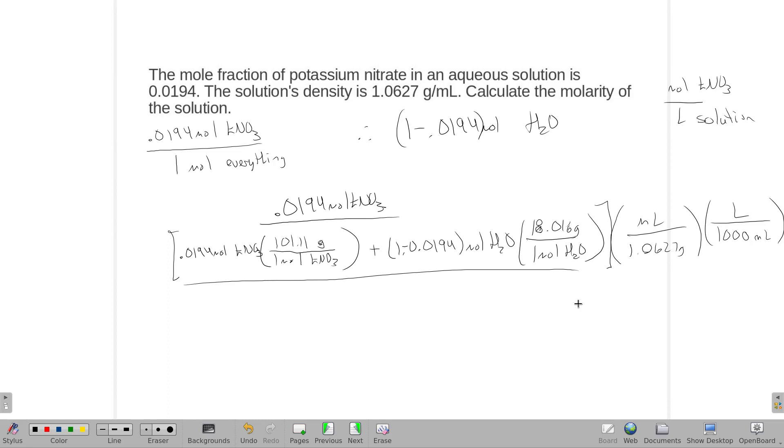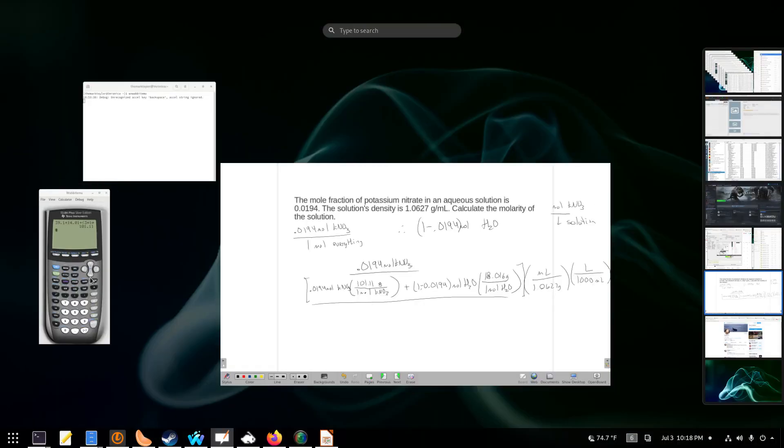I'm going to break this down in the calculator, so we can follow along with what I'm doing here. I'm going to start by getting the mass of the potassium nitrate - I just did the 0.0194 times 101.11.